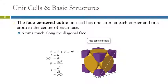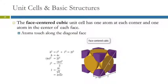Then we have the face-centered cubic. Instead of that extra atom being centered in the body of the unit cell, it's centered on the faces. We have six faces, each contributing half an atom — that's three atoms — plus the one from the corners, giving four atoms total. The atoms touch from a corner diagonally across a face: R + 2R + R = 4R is the hypotenuse of that right triangle, giving L = 2√2 × R.